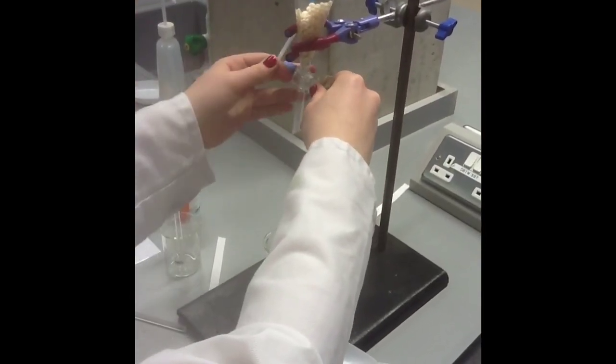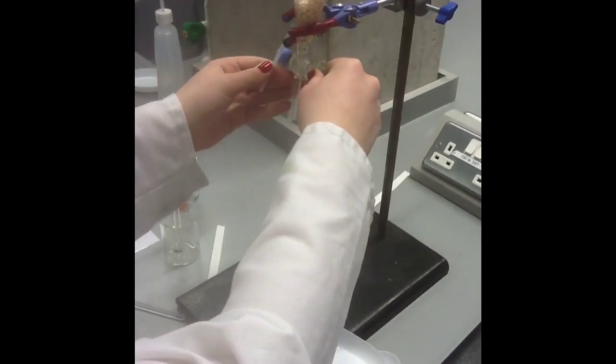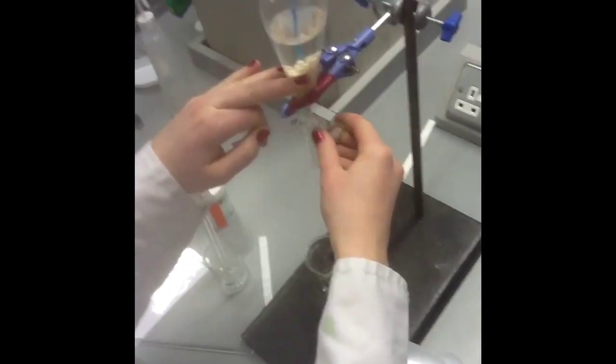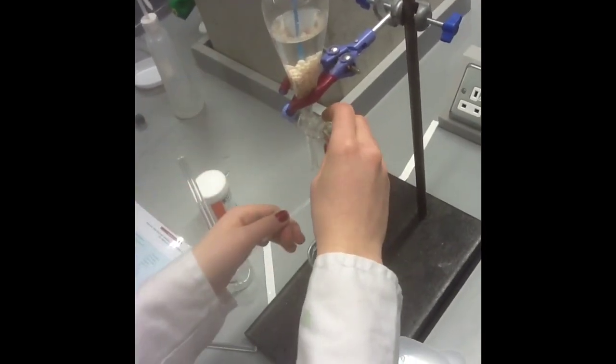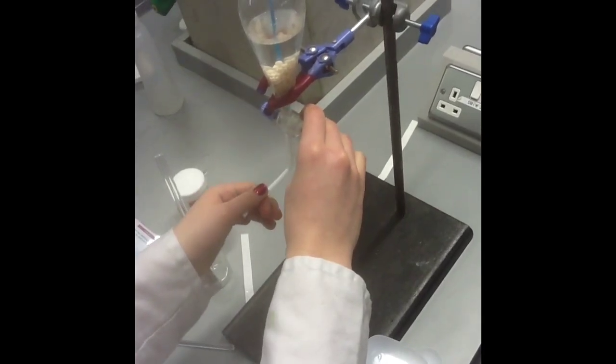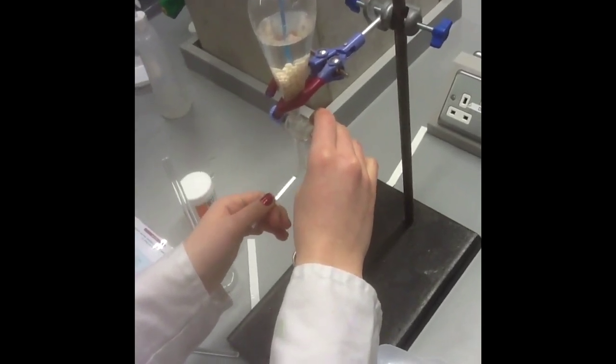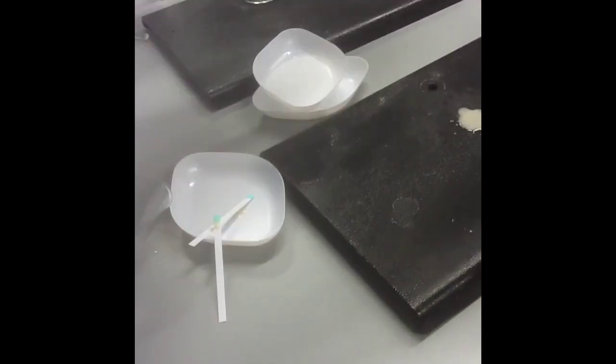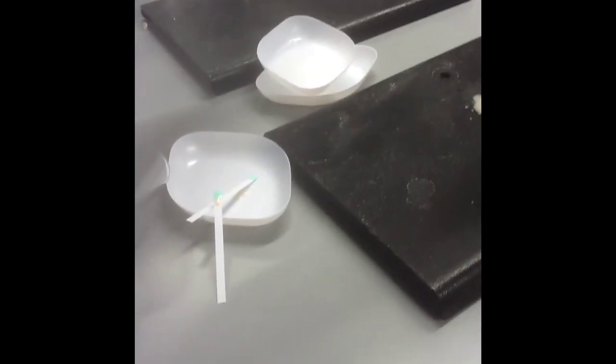Using glucose test strips, immediately test samples from each funnel for glucose. Repeat the test at 2 minute intervals until glucose appears in both. Make sure to record your results. It is important to place a beaker under each funnel to record the turbidity of the solutions from both funnels. This is basically how cloudy the solution is. Replicate the investigation or cross reference your results with other groups.